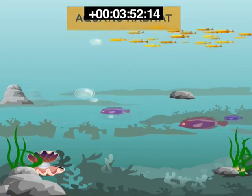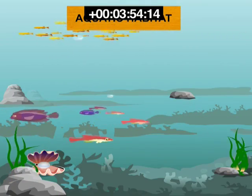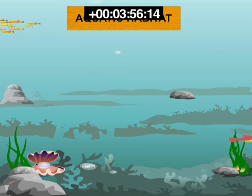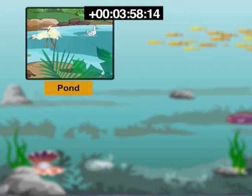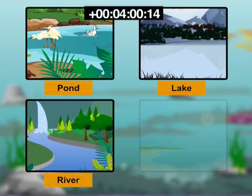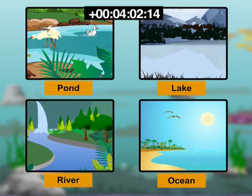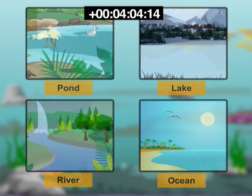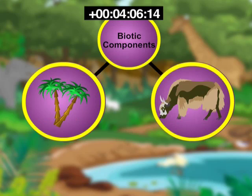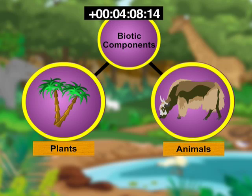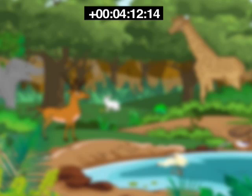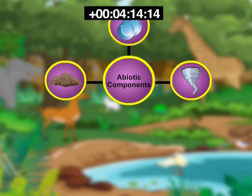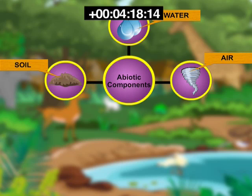The habitats of plants and animals that live in water are called aquatic habitats. Ponds, lakes, rivers, and oceans are some examples of aquatic habitats. The living things such as plants and animals in a habitat are its biotic components. Various non-living things such as rock, soil, air, and water in the habitat constitute its abiotic components.